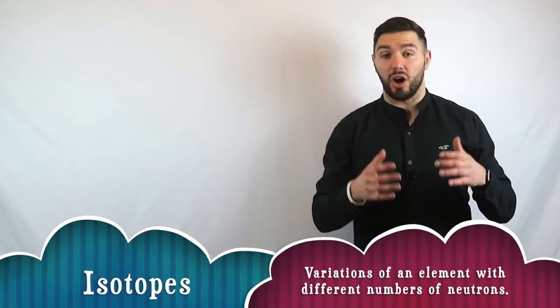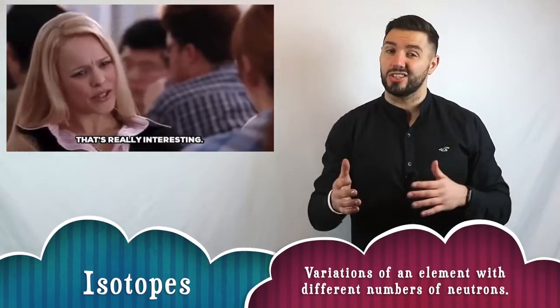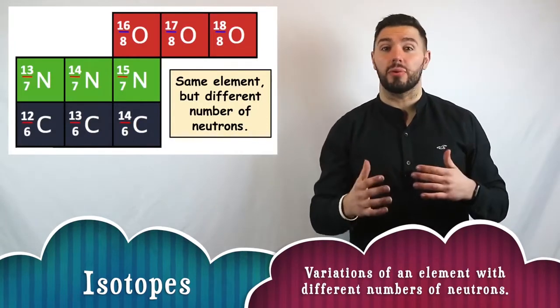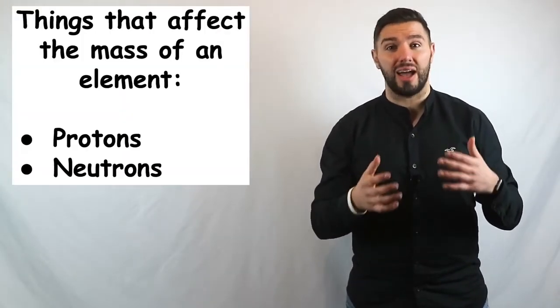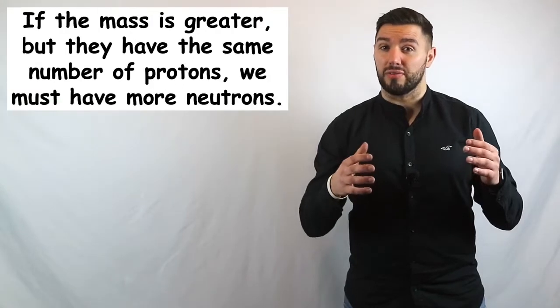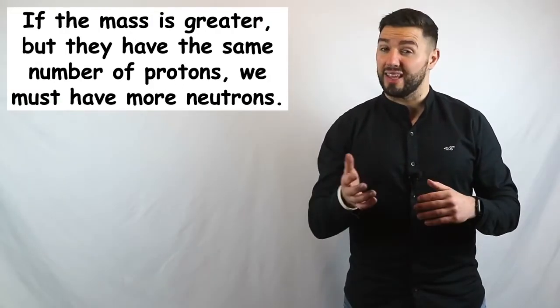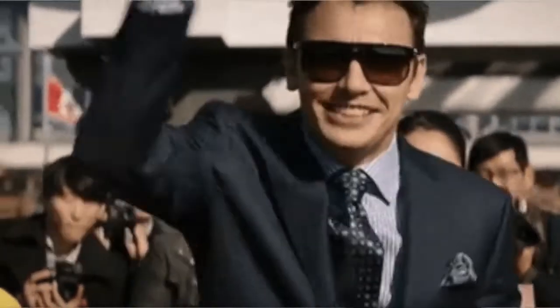Now, the interesting thing with isotopes is that that number of neutrons inside an element can actually change. We could have different variations of the same element with different numbers of neutrons. Now, people get confused about isotopes all the time, but really, the only key difference is that the mass is changing, and that's because the number of neutrons is different in the different variations of that element. But at the end of the day, it's still the same element, and that's because the number of protons has not changed.